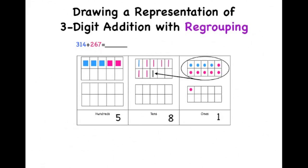This means that the sum of 314 plus 267 is 581.